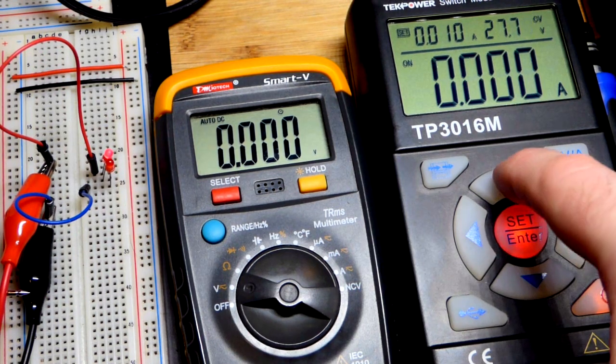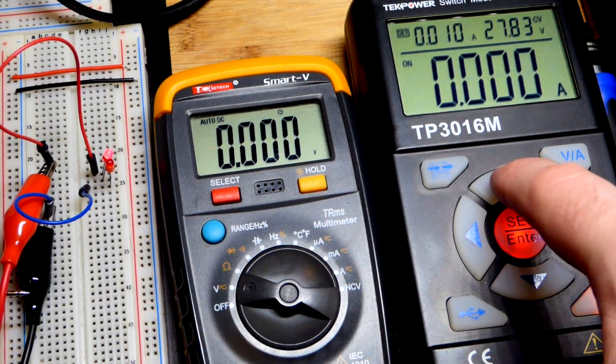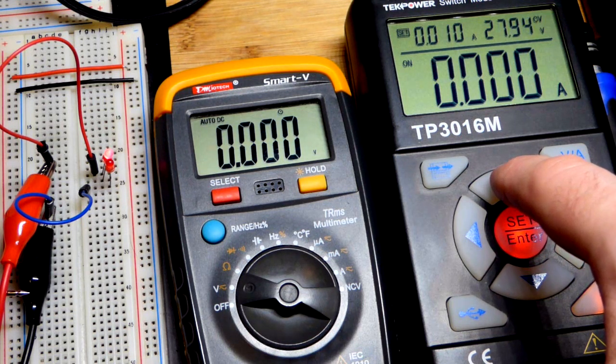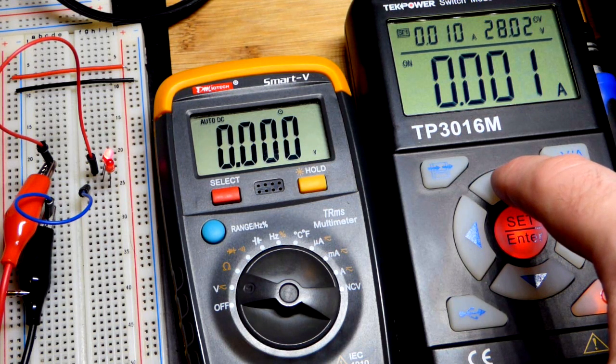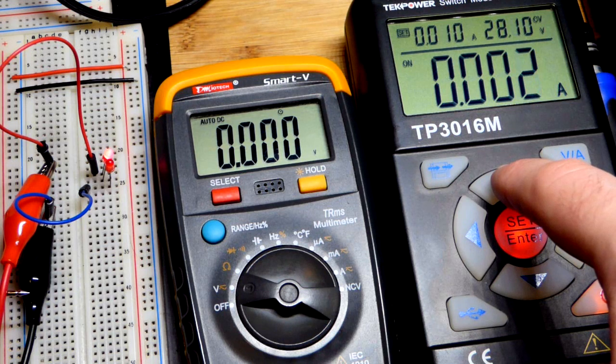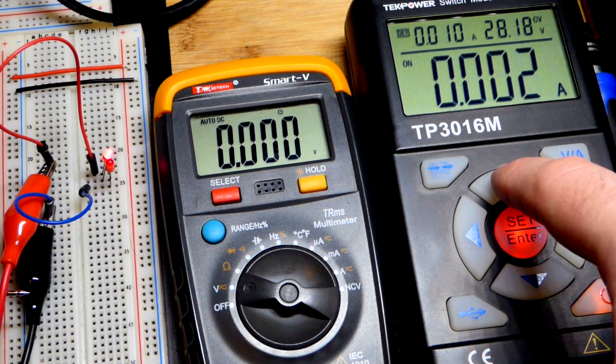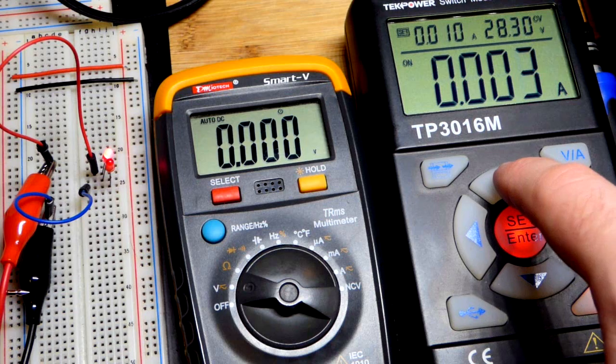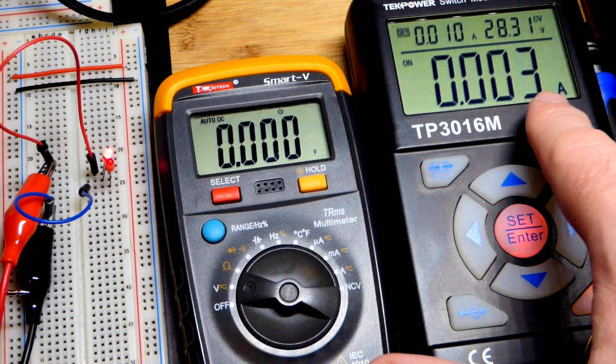As less current flowing through it, it's blocking a little less voltage, so not a lot less. It's pretty much still about 1.8 but it goes down a little bit with the current going down.